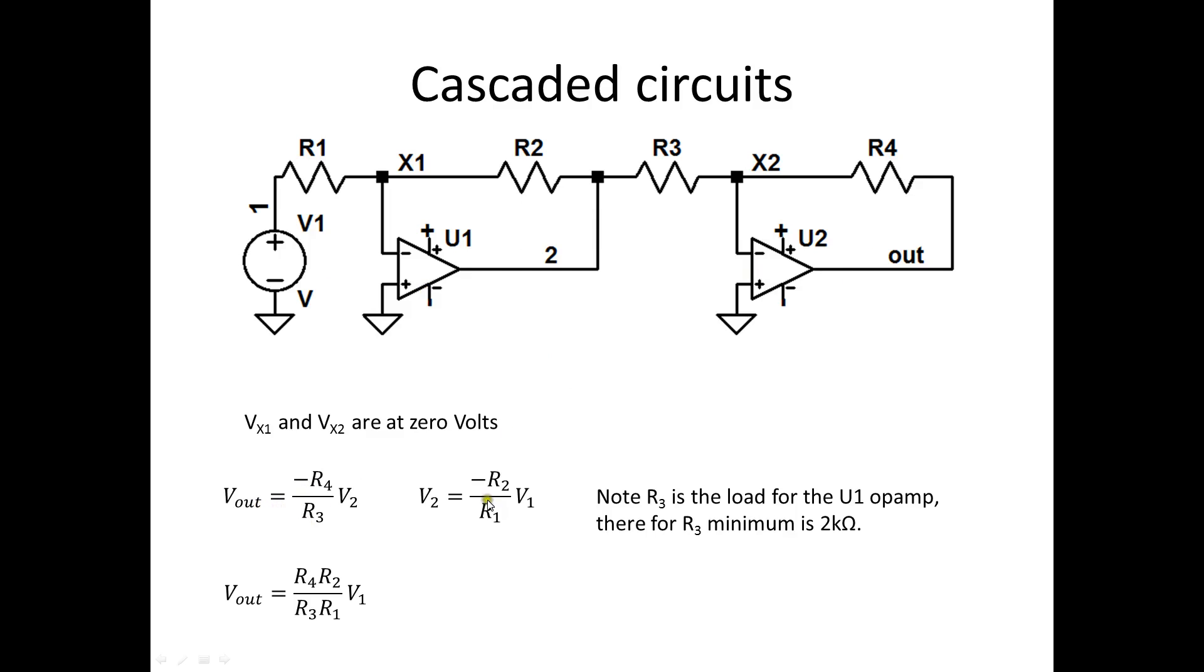So, Vout, in this case, is minus R4 divided by R3. And the gain here is minus R2 divided by R1. But note, this R3 is connected to X2, which is at a virtual ground because of the feedback and the open loop gain being infinite, and this pin being at ground.